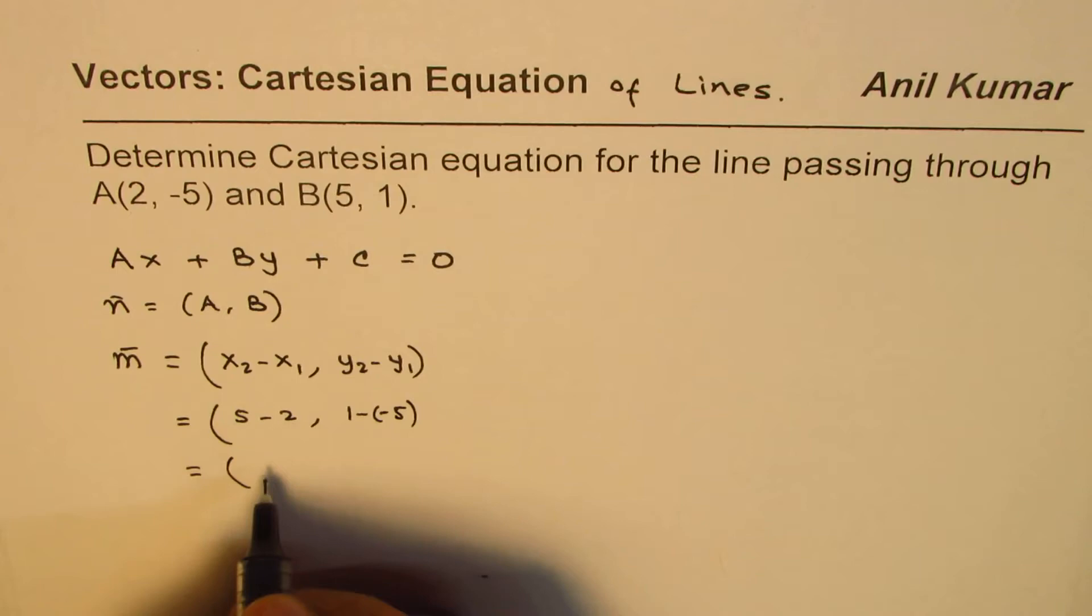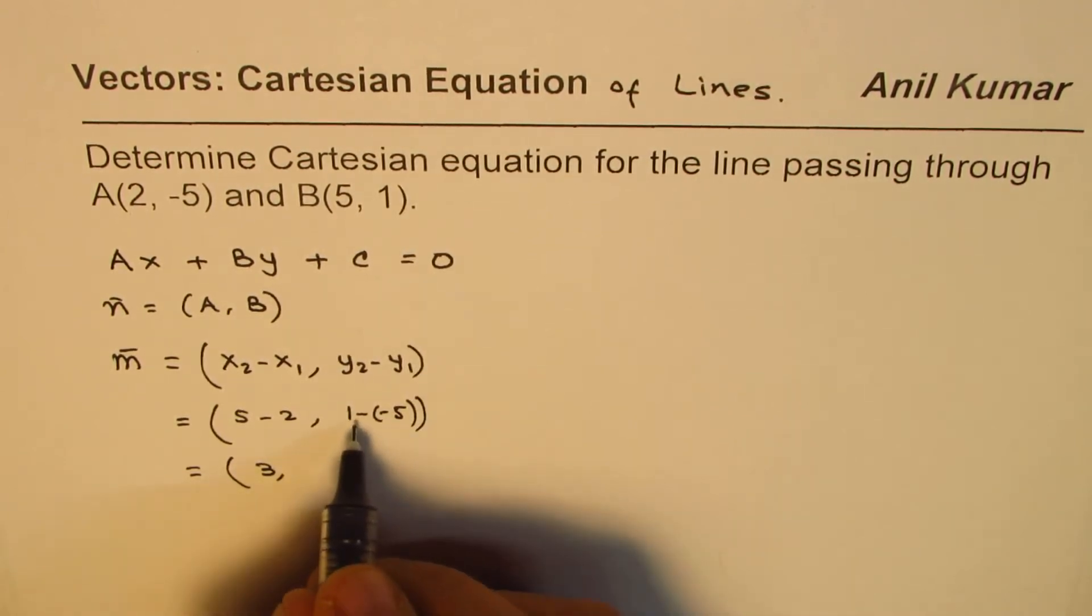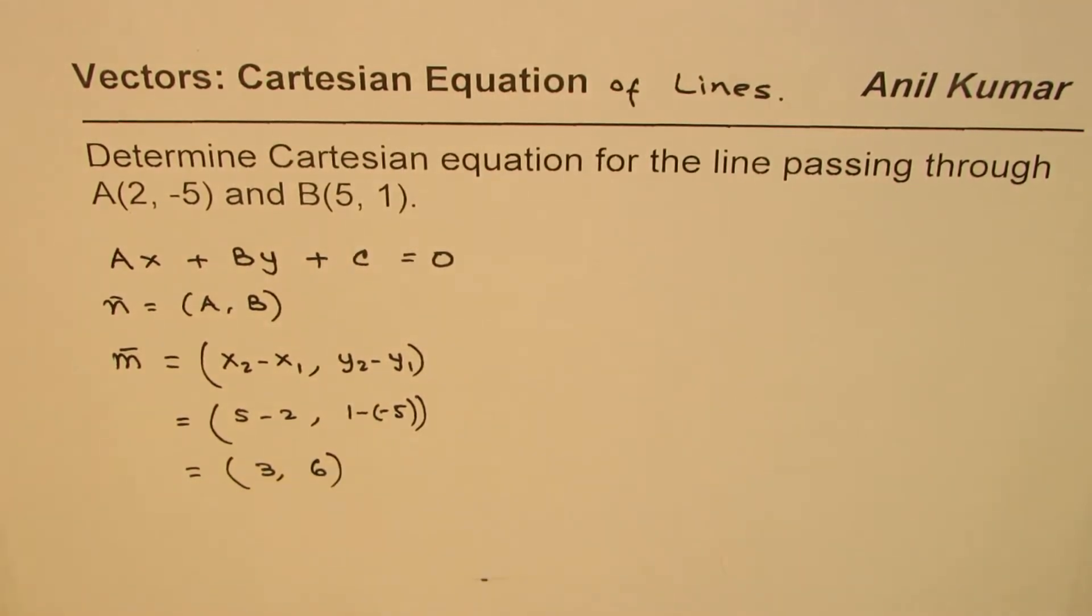So which I could write as 5 - 2 is 3. And this is 1 - (-5) means 1 + 5 which is 6. So that becomes the direction vector.